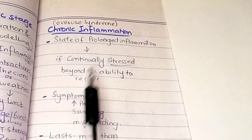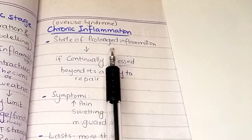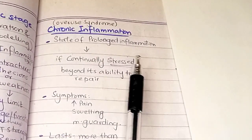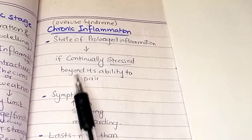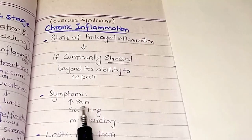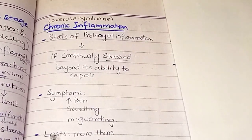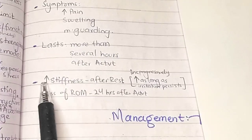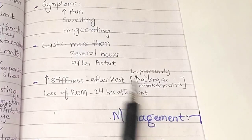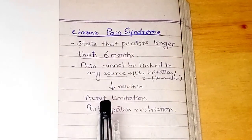Now let's discuss chronic inflammation, which is also regarded as overuse syndrome. It is basically a state of prolonged inflammation where if tissue is continually stressed beyond its ability to repair, there is going to be prolonged inflammation. Symptoms include increased pain, swelling, and muscle guarding. This stage lasts for more than several hours after activity. The patient experiences increased stiffness after rest, which increases progressively as long as irritation persists, and there is loss of range of motion 24 hours after activity.